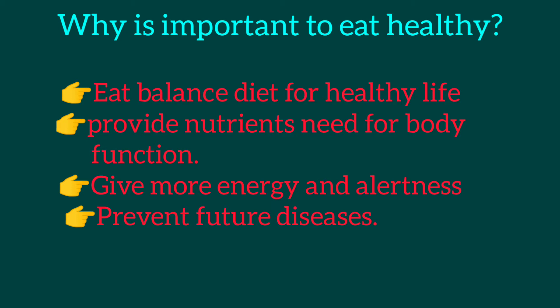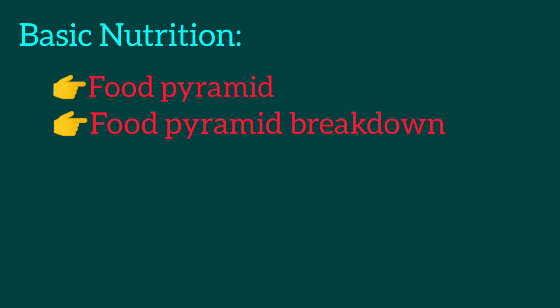For example, diabetes, obesity, and cancer. Now we see basic nutrition. First of all, food pyramids — recommendations of what to eat based on dietary guidelines. The food pyramid breakdown includes fat, dairy, meat, fruits and vegetables, and grain.